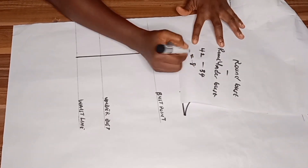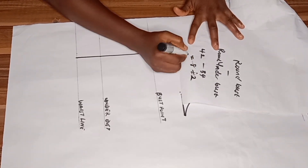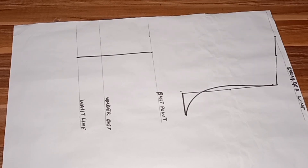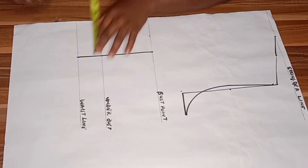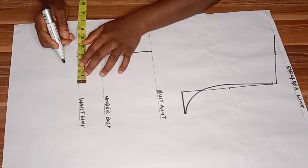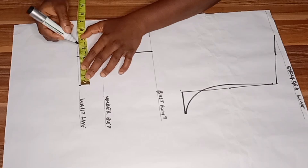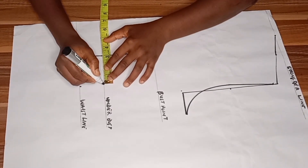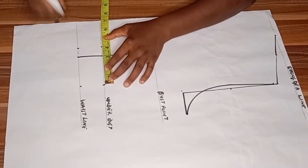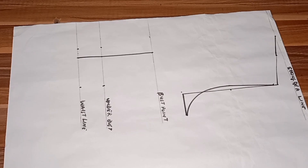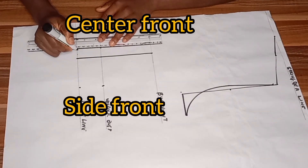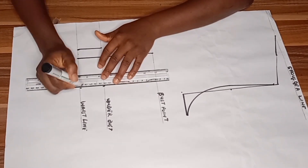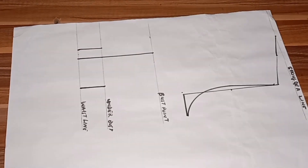My round under bust is 34. When I subtract, it gives me eight inches. Eight inches divided by two gives me four inches, so that is what I'm going to use for my under bust dart intake. I'll share a larger part to the side and a smaller part to my center front — one inch to the center front and three inches to the side front — and connect it into the waistline and under bust.